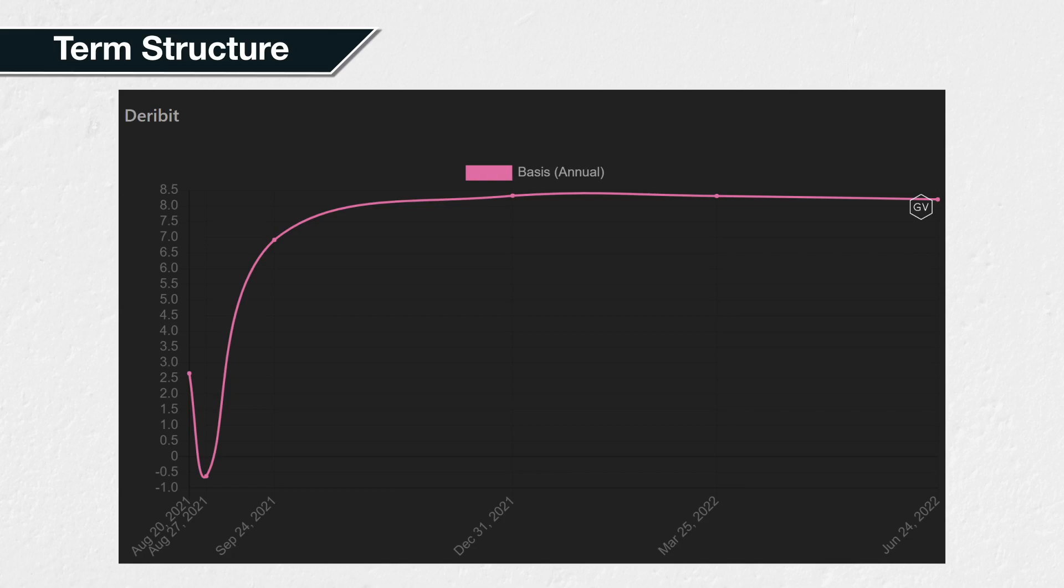With the exception of the two near-dated expiries, the term structure here is quite flat. The percentage is very similar for the next four quarterlies. The near-dated expiries can fluctuate quite a bit. Due to the low number of days until expiry, even a small change in the dollar premium can translate into a relatively large change in the annualized percentage.